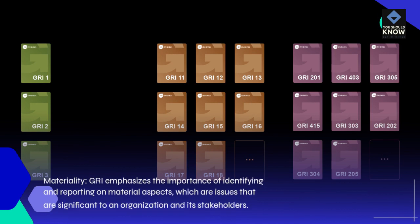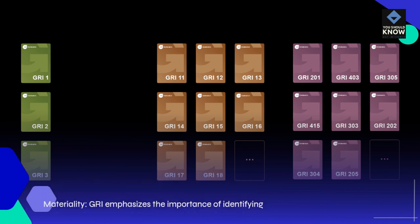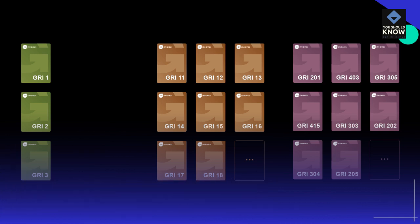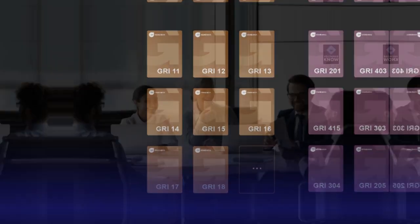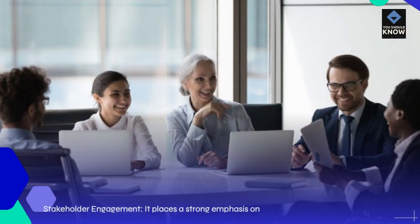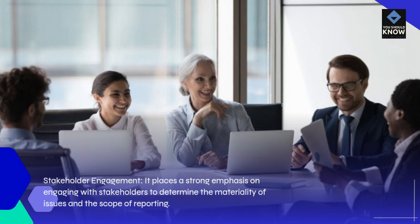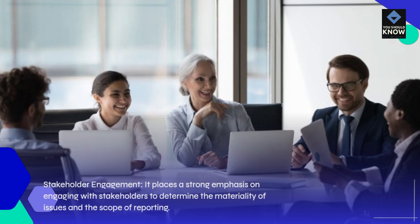Materiality: GRI emphasizes the importance of identifying and reporting on material aspects, which are issues that are significant to an organization and its stakeholders. Stakeholder Engagement: It places a strong emphasis on engaging with stakeholders to determine the materiality of issues and the scope of reporting.